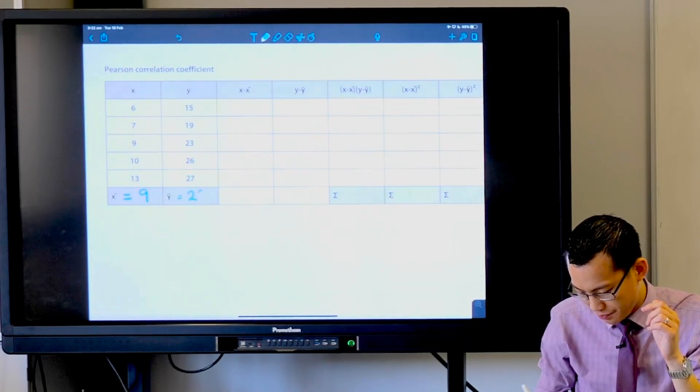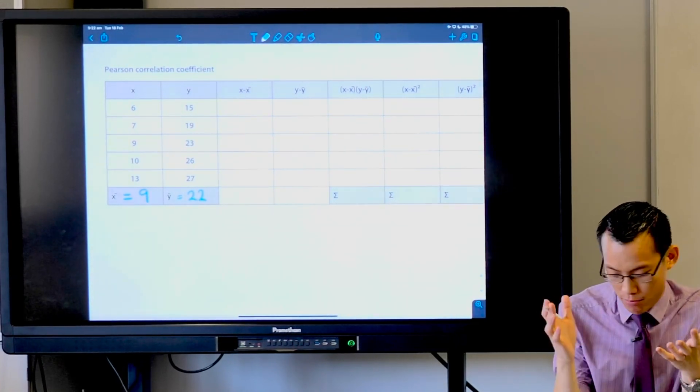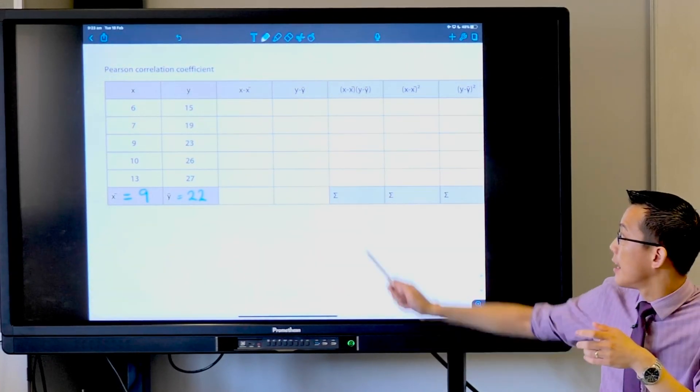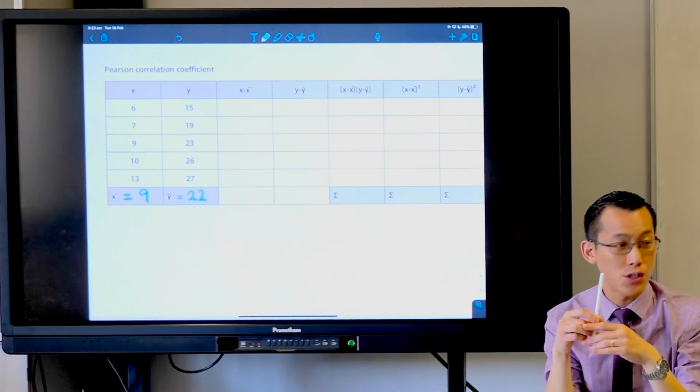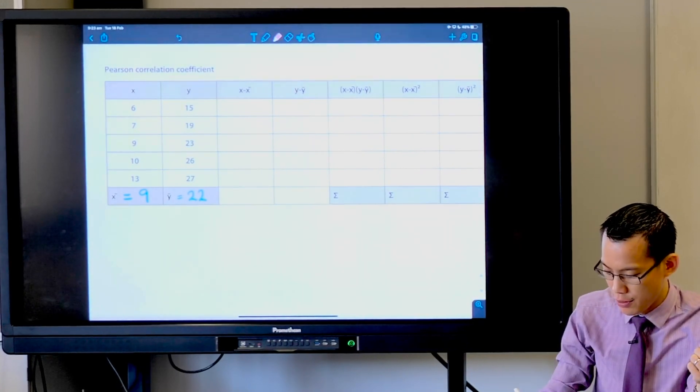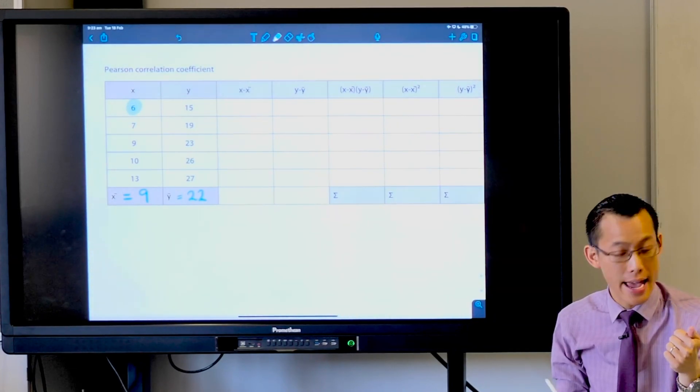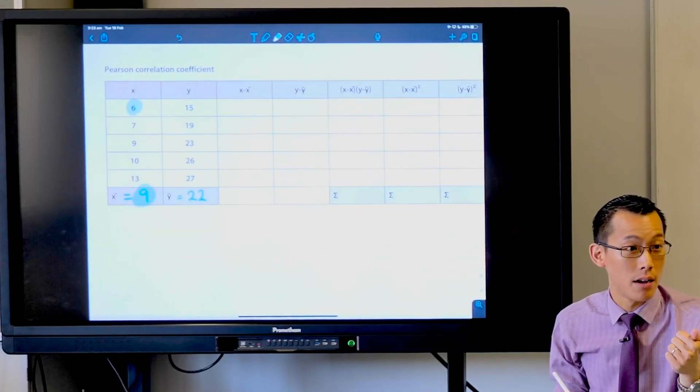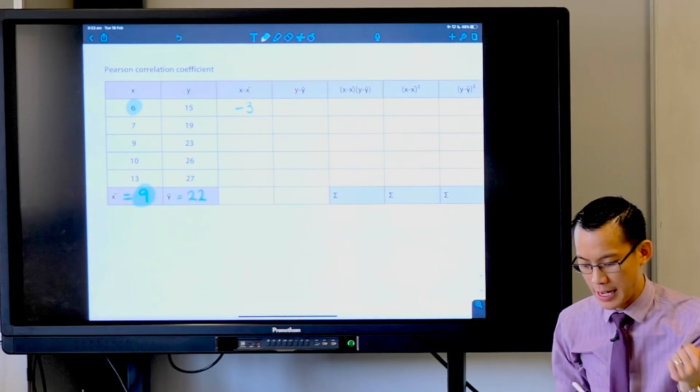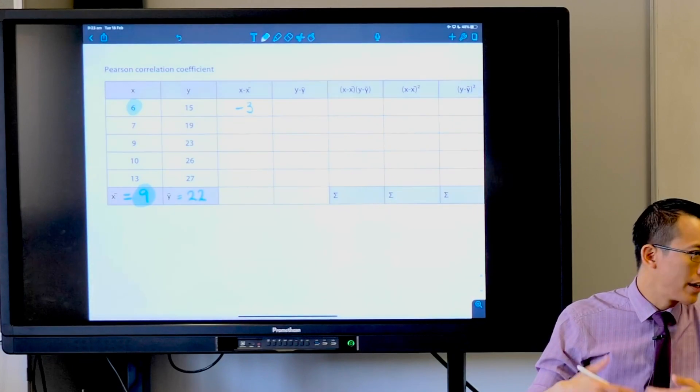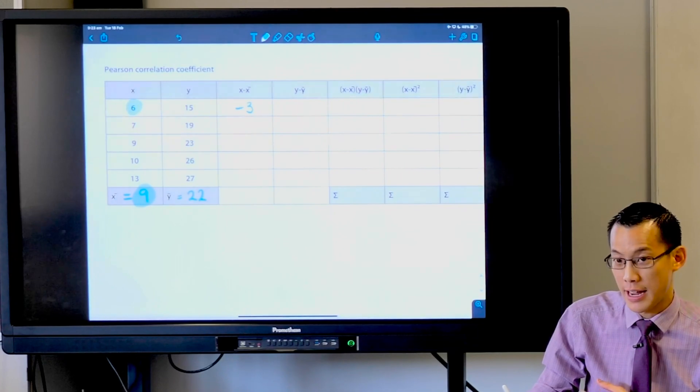Now that we've got x-bar and y-bar, we can work out each of these differences. I'll give you the first one for free: x minus x-bar on the first row. Six (there's x) take away nine (there's x-bar)—what's that? Negative three. Then we keep going down the line: seven take away nine is negative two, nine take away nine is zero...